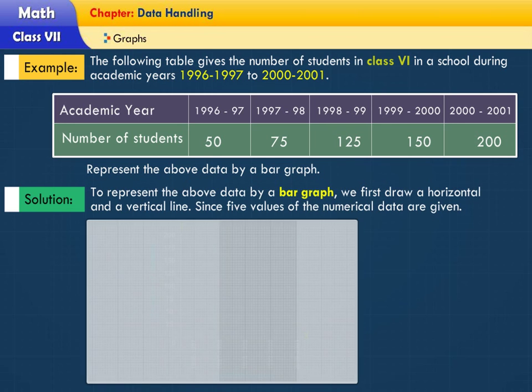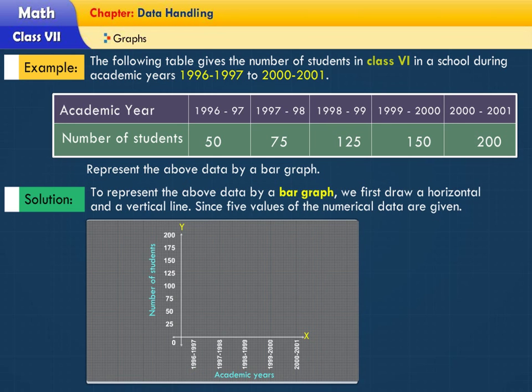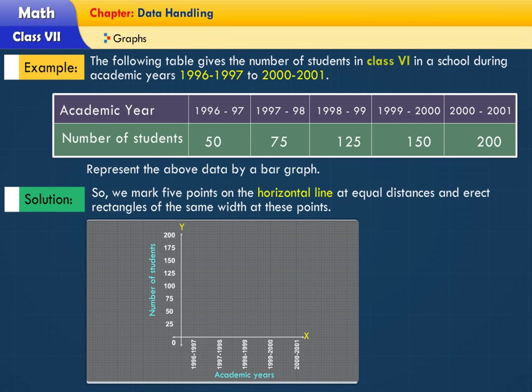To represent the above data by a bar graph, we first draw a horizontal and a vertical line. Since five values of the numerical data are given, we mark five points on the horizontal line at equal distances and erect rectangles of the same width at these points.